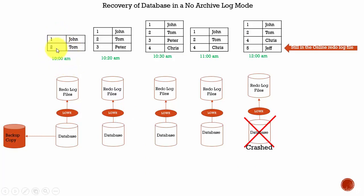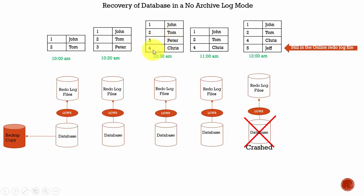Let's see with an example. At 10 a.m., we have two rows in a customer table. At 10 a.m., we have taken a backup copy. Various changes are being applied — the log writer is writing to the redo log files. At 10:20 a.m., we inserted a record with customer ID 3 and Peter. At 10:30 a.m., we inserted another record, ID 4, with name Chris. At 11 a.m., we deleted customer ID 3 and Peter. At 12 a.m., we inserted another record for customer ID 5 and Jeff. Various operations were performed on the database.